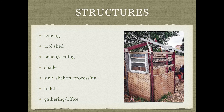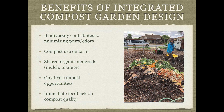A laundry list of structures to consider: you might need fencing or a gate for security if you deal with vandalism, a tool shed with a lock, cob benches or picnic tables for seating areas. These are really helpful. To summarize the benefits of this integrated compost-garden design approach: